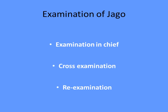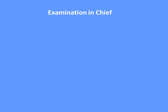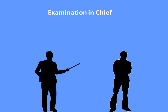Let us come to the examination of Jagu — what happens in the open court. Once Jagu comes before a court and stands in the witness box, he would be examined. The first examination is examination-in-chief. There are two parties in the court — Party One and Party Two — known by different names depending on whether the case is civil, criminal, or otherwise.